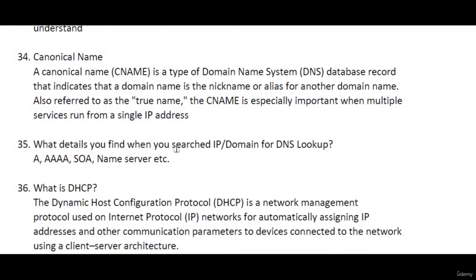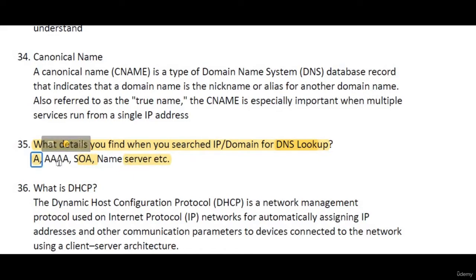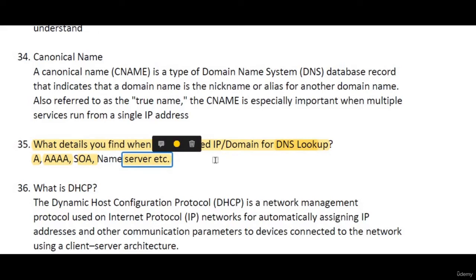What do you find when you search an IP domain for DNS lookup? In a DNS lookup, you'll find records such as A, AAAA, SOA, and name server details. The A record shows IPv4 addresses, AAAA shows IPv6 addresses, and SOA — Start of Authority — gives you the administrator email ID and when the IP was last updated. There are more components, but you'll need to search on a DNS lookup tool. Many interviewers ask this question.